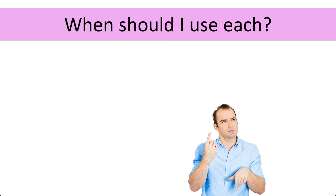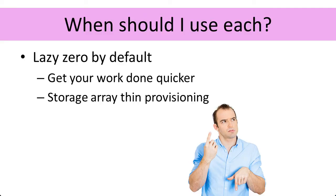When should I use which? The default is lazy zeroing — to get your job of creating the virtual machine and adding the disk done very quickly. Lazy zeroing also doesn't have an impact on the back-end storage. You should use lazy zeroing when you've got a storage array that does thin provisioning. When we eager zero, we write to every block in the disk, and for most storage arrays that are thin provisioned, that means they have to allocate backing blocks for all of those disk blocks that we've just zeroed.